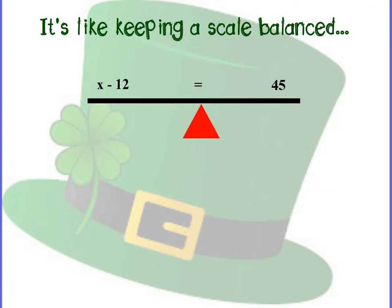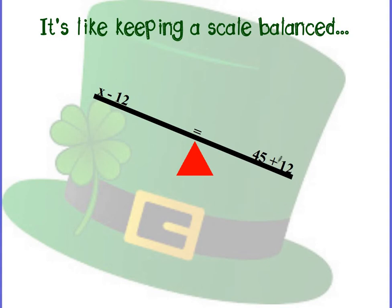So when we talk about this, it's like keeping a scale balanced. If I have x minus 12 equals 45, what's on this side of the scale is equal to what's on this side of the scale. I know that to figure out what I took away from, I have to do the inverse — the opposite. So if I took 12 away from something and now I have 45, I know I have to add 12 to 45 to figure out what x is. However, if I only do that on one side, that makes this side of the balance heavier than the other side, and I haven't kept it balanced.